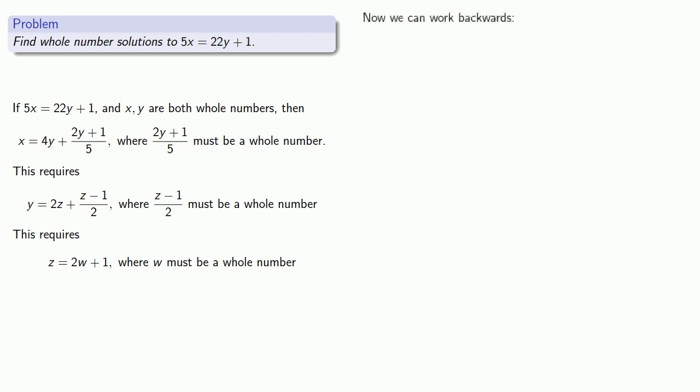And now we can work our way backwards. As long as w is a whole number, z will be a whole number, where z minus 1 over 2 is a whole number. And that means y will be a whole number, which means that 2y plus 1 over 5 will be a whole number, and x will be a whole number, which is what we're looking for.